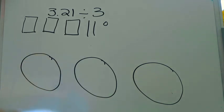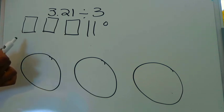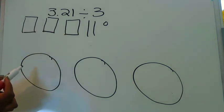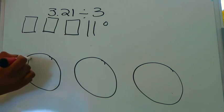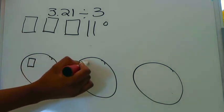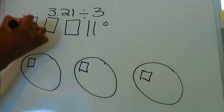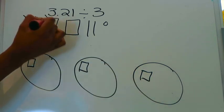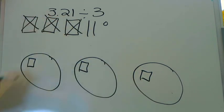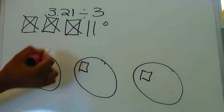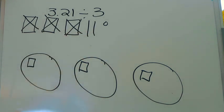Now I need to start dividing the pieces equally. By sight I can see I have enough ones to put one whole into each group, so I'll place one whole in each of the three groups and cross each one out. Now when I look, I have two tenths left and one hundredth — not enough to equally distribute into three groups.